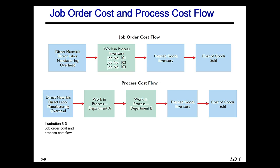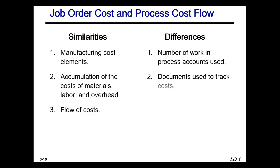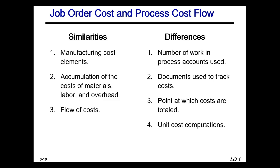In a job order cost system, we take the direct materials, labor, and manufacturing overhead and apply them to specific jobs. After the job is completed, we transfer it to finished goods, and once those products have sold, they are transferred to cost of goods sold. In a process cost system, we assign costs directly into work in process for specific departments — Department A, then Department B — and once finished, they end up in finished goods and eventually cost of goods sold. The determination of total manufacturing costs in a job order system is done per job, whereas in a process system it is done each period.